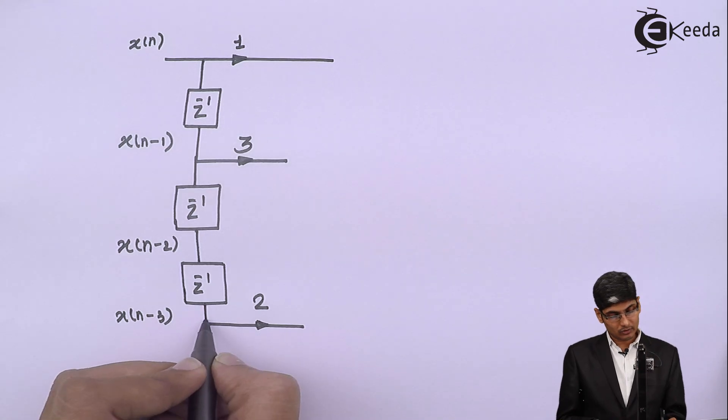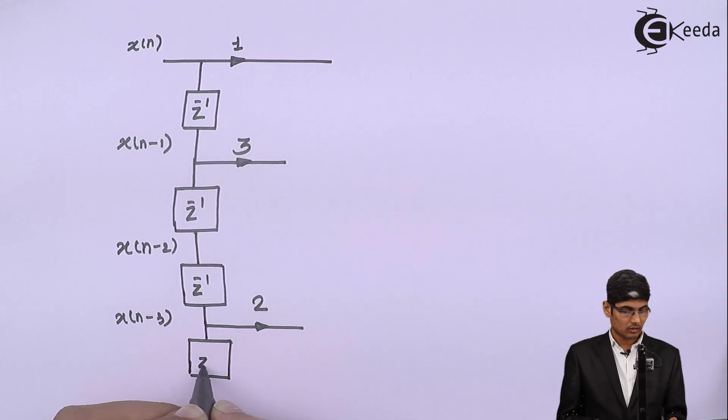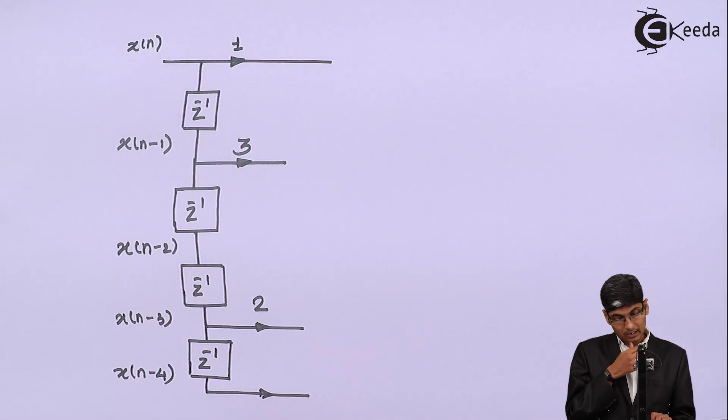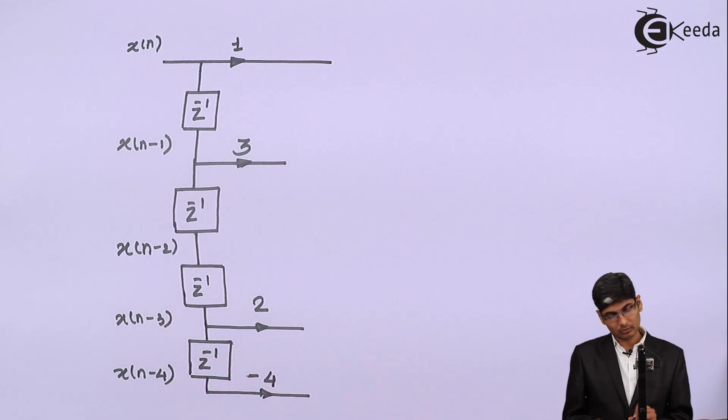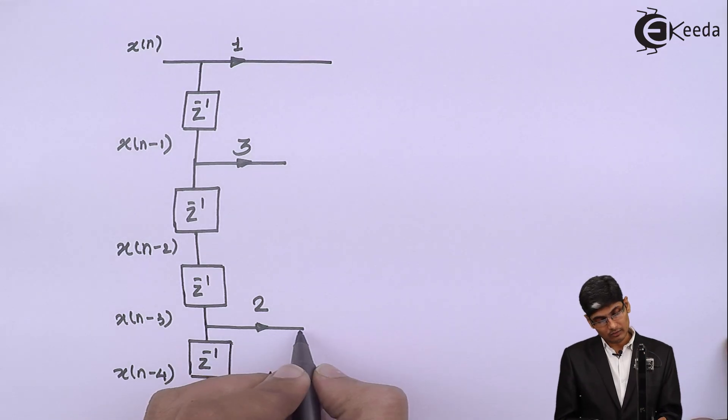Then I have to delay it one more time because there are 4 times of delays. So this is Z raised to minus 1 and now this becomes X of N minus 4. Now the multiplier is minus 4. Don't write 4. Retain the signs when you are moving in the forward direction. Now, we need to add them all.